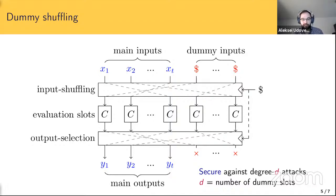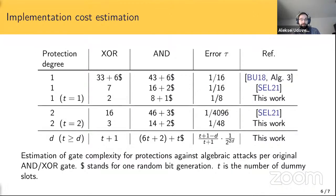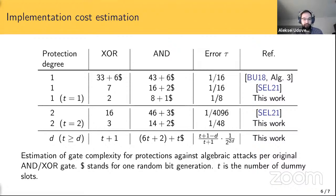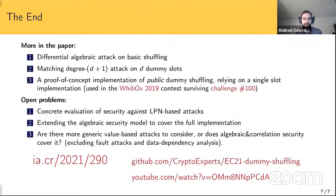Compared to previous protections against algebraic attacks — based on non-linear masking schemes first presented at Asiacrypt three years ago for degree-one attacks and generalized at CHES this year by Żebrowski, Eisenbarth and Liskevich — the dummy shuffling scheme significantly improves both implementation complexity and the error lower bound, which determines robustness against LPN variants of the attack. Importantly, it provides protection against arbitrary degrees at very reasonable cost, with a proof-of-concept used in one of the winning challenges of the WhibOx 2019 competition.